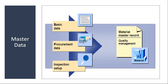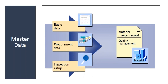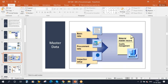To execute this process in the system, you first need all the QM basic data like MICs, sampling procedures, and inspection plan — all those things are needed from the QM side. From the MM side, they will create all the procurement-related data like vendor and material master. On top of that, you need to make the inspection setup in the material master QM view in materials management. I will show this in the system.